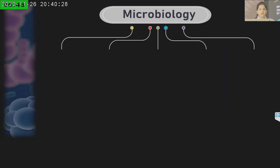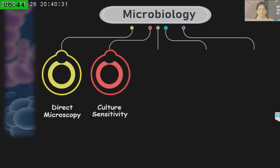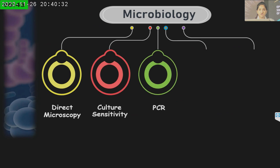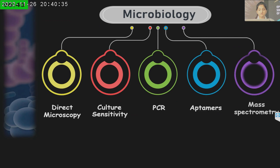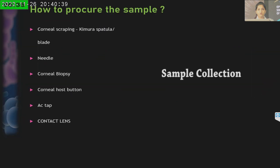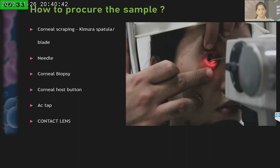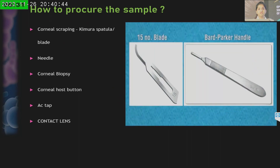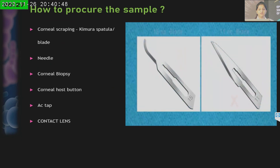In microbiology we have direct microscopy, culture and sensitivity, and PCR, but some of the recent advances are aptamers and mass spectrometry. Coming to sample procurement, we can use corneal scraping with the help of a spatula or blade, we can use a needle, we can do a corneal biopsy or use the corneal button, AC tap, and contact lenses can also be sent.